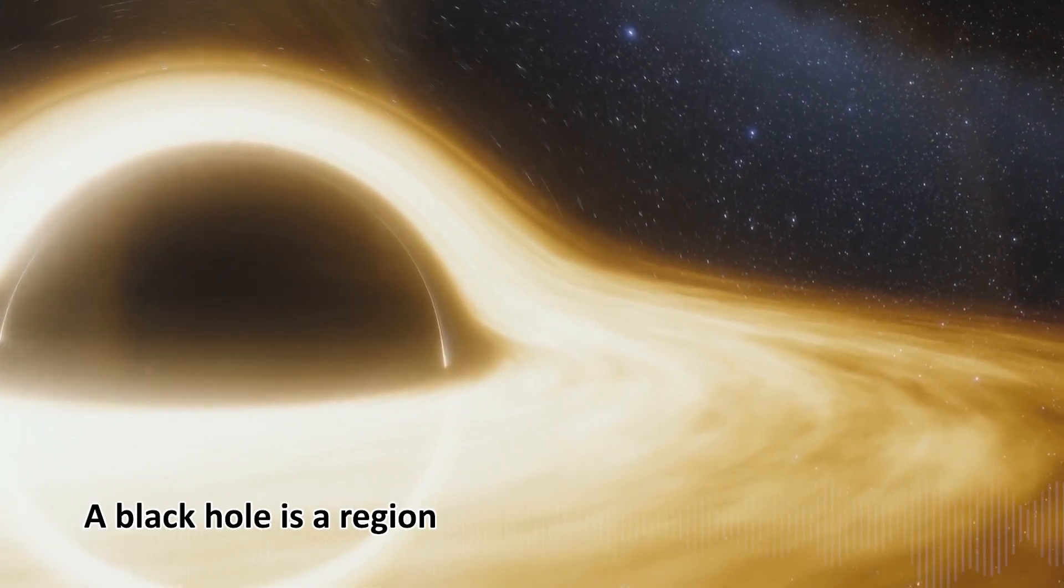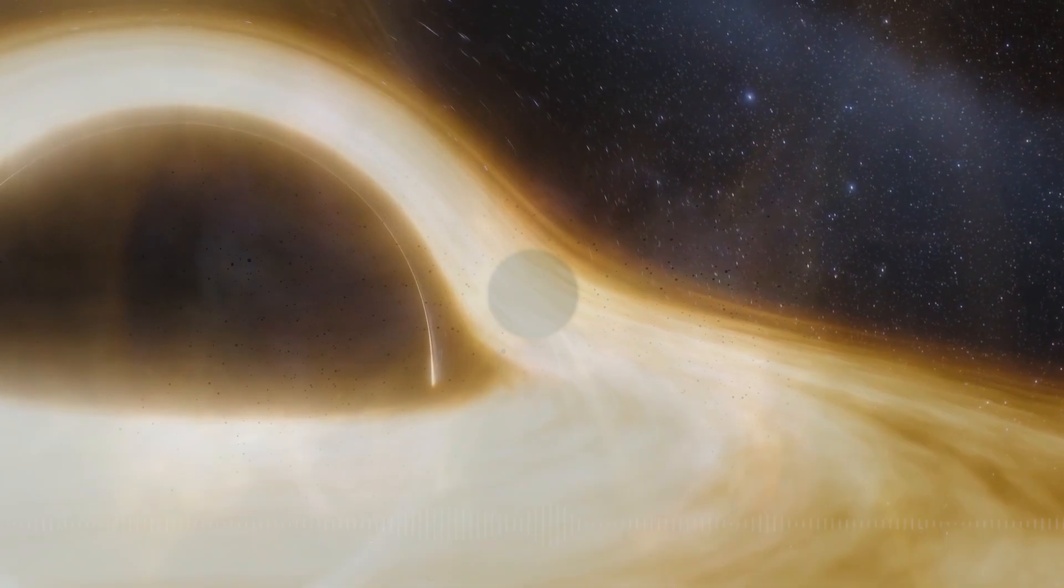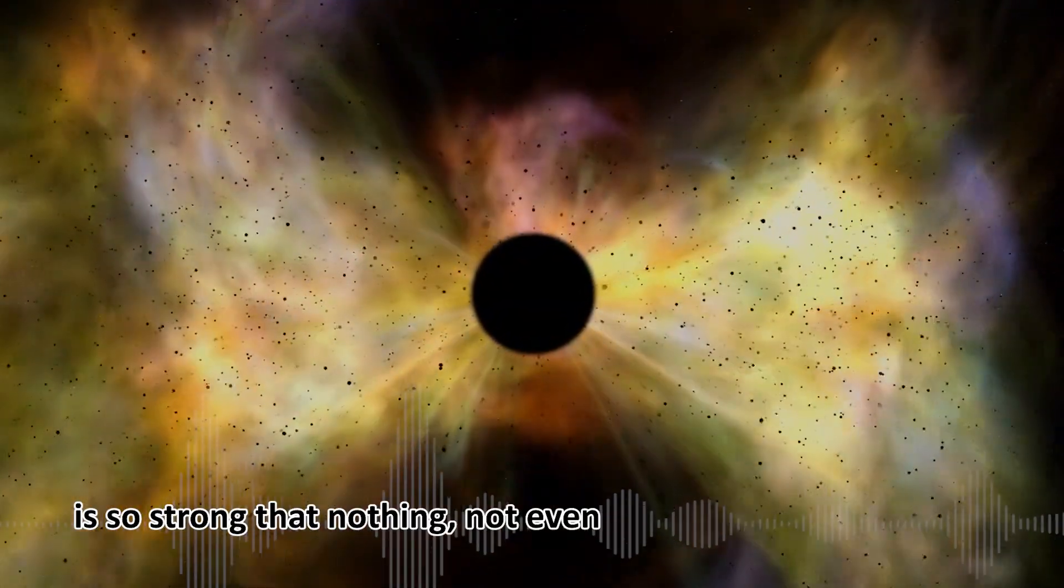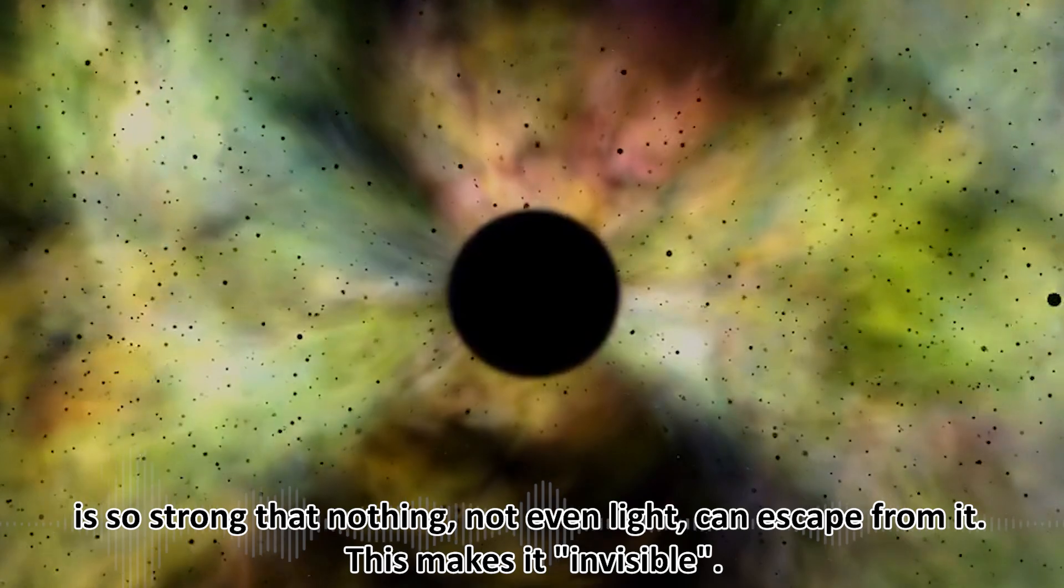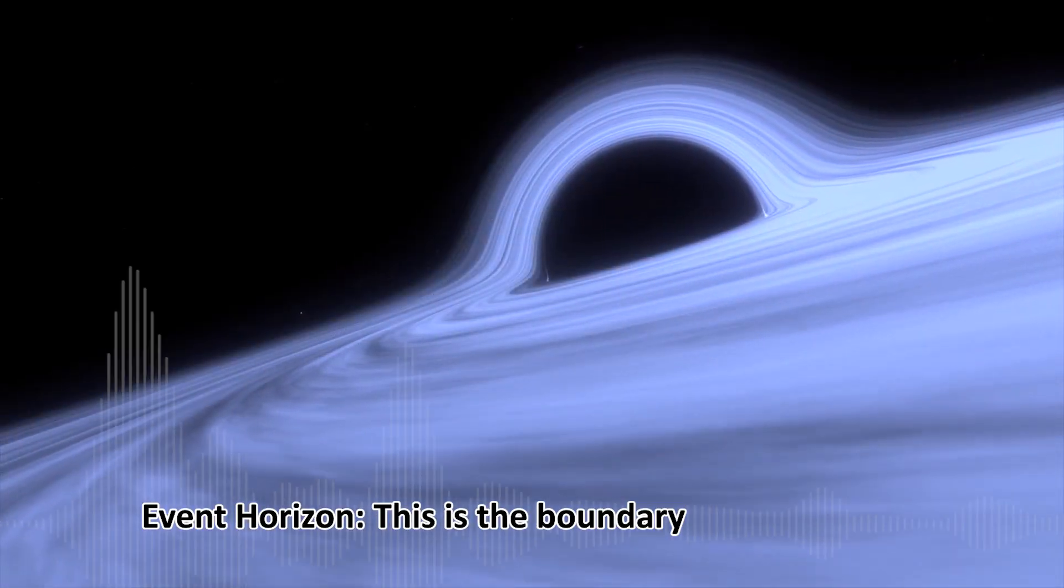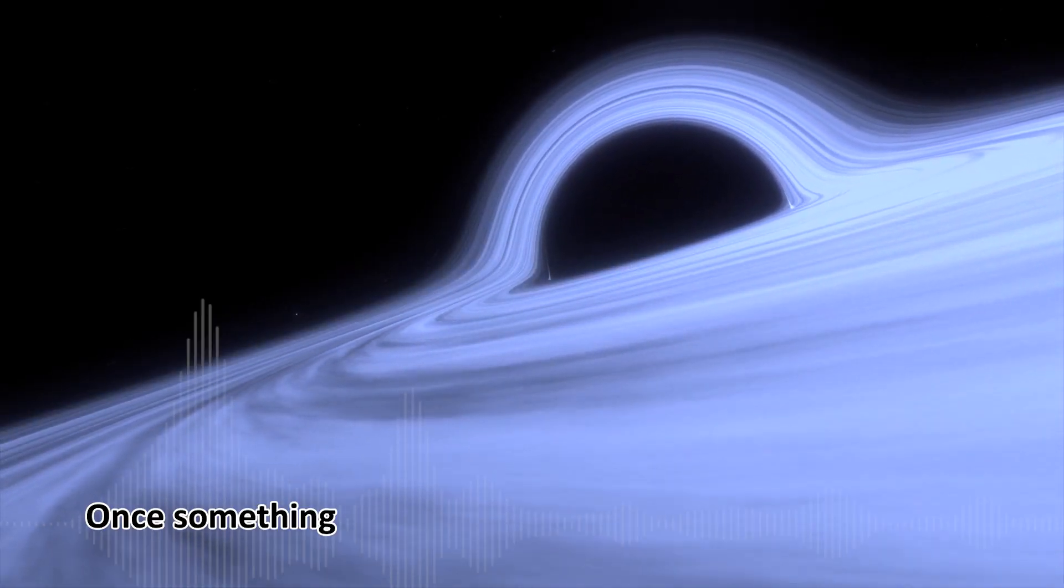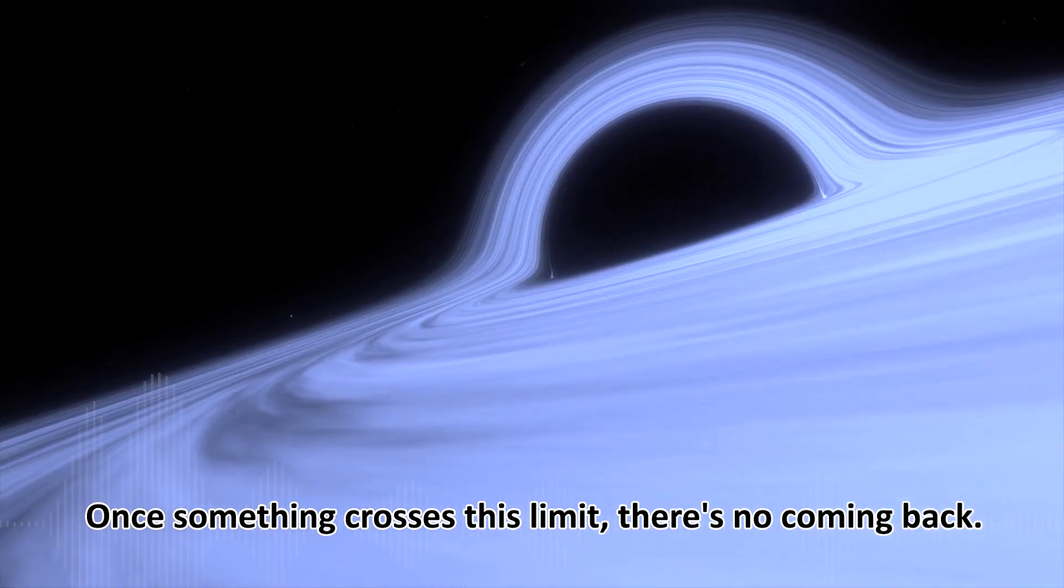A black hole is a region in space where the force of gravity is so strong that nothing, not even light, can escape from it. This makes it invisible. The event horizon is the boundary of a black hole. Once something crosses this limit, there's no coming back.